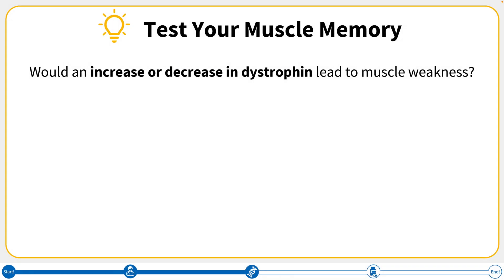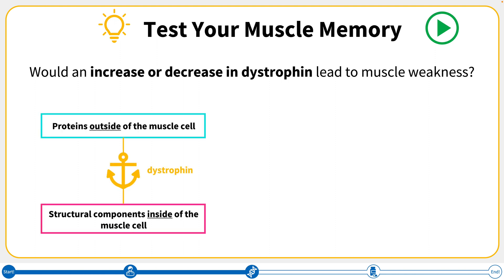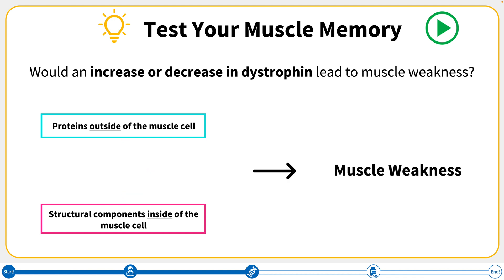Let's take a moment to test our muscle memory. We know that dystrophin is important for healthy muscles and that changes to the DMD gene can lead to Duchenne. Pause the video here to think about whether having more or less dystrophin in the cell would lead to muscle weakness. Remember that dystrophin is acting like an anchor between structures inside and outside the cell to help give the muscle the strength it needs to work properly. If we lose dystrophin, we lose these strong connections and the muscle becomes weak. So we would expect that a decrease or loss of dystrophin would lead to Duchenne.